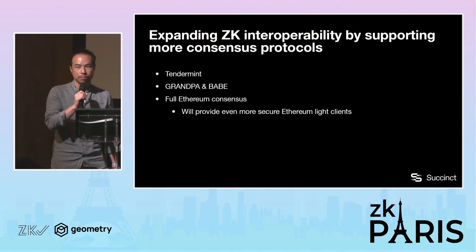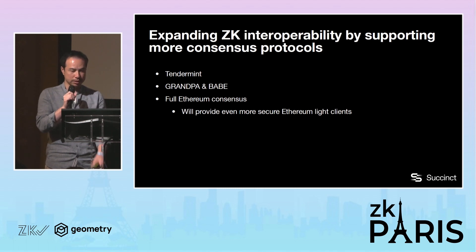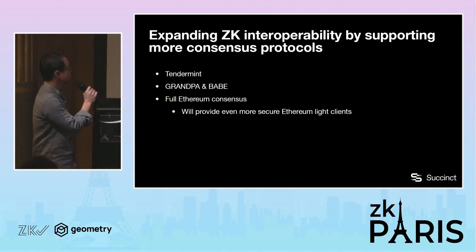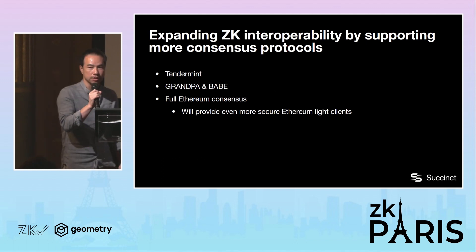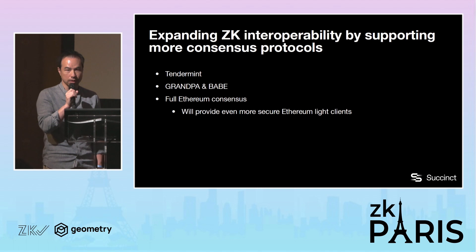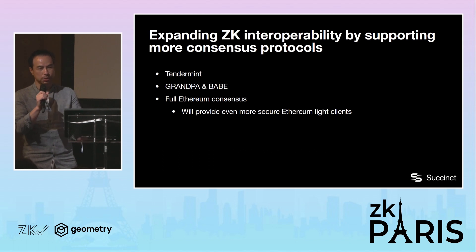We don't want to just stop at Ethereum. We are very actively working on other consensus protocols. The ones we're working on are Tendermint, which is used mainly in Cosmos, as well as Grandpa and Babe consensus, which are used within the Substrate SDK that Polkadot is using. Eventually we plan to do full Ethereum consensus — right now we are just doing the Ethereum light client consensus, but full Ethereum consensus would provide a bit more security.